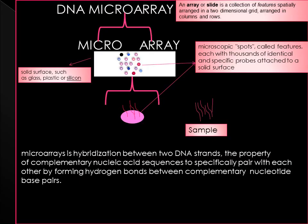In DNA microarray, the solid support is a glass or silicon slide on which a collection of microscopic DNA spots are attached. Each spot represents a single gene, carrying DNA segments known as probes, and these spots are also called features. DNA sequences may be larger or shorter depending on the desired purpose. Longer probes are more specific to individual target genes, while shorter probes may be spotted in higher density across the array and are cheaper to manufacture. DNA microarray measures the expression level of thousands of genes simultaneously.